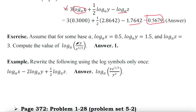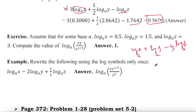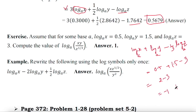Similarly, you can try the next one on your own — it is exactly the same type. It will simplify to: log x plus log y minus one-third log z, all base a. Putting in the values: 0.5 plus 1.5 minus 3, which equals negative 1. So negative 1 is the answer of this one.